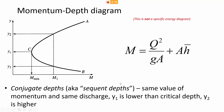This momentum depth diagram is not a specific energy diagram, though it kind of looks like one. Remember when graphing specific energy, the vertical axis was flow depth and the horizontal axis was specific energy — a sideways parabolic shape. Here, we have a graph of depth, and for a certain flow rate there's a variety of different momentum values that can occur. Different combinations of depth and velocity for the same flow rate through the same channel are graphed. The purpose of the momentum depth diagram is to predict what the new depth will be after a hydraulic jump.